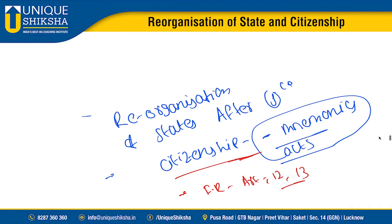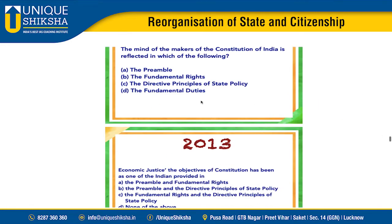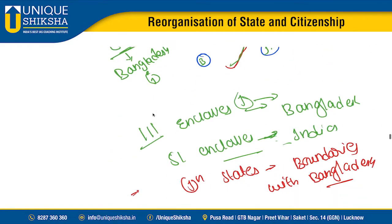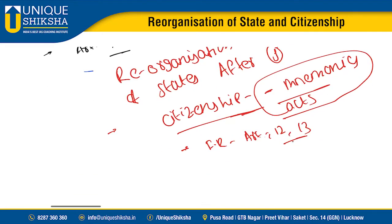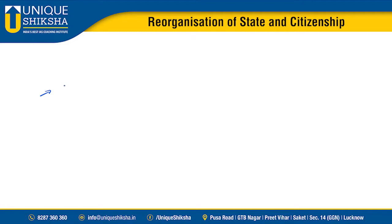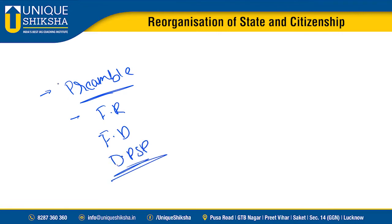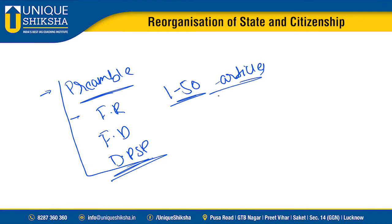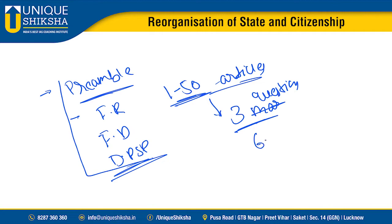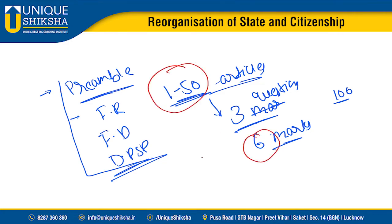Many students ask me in offline classes: I always place excessive emphasis on remembering the Preamble, fundamental rights, fundamental duties, and DPSPs. I ask each and every student to memorize all Articles 1 to 50. If you are thorough with Articles 1 to 50, three questions — six marks — will come for you. Assuming the cutoff hovers around 100 marks, being thorough with Articles 1 to 50 means six percent of your preparation is finished.